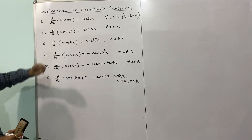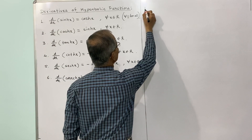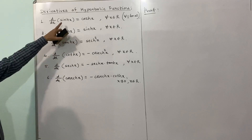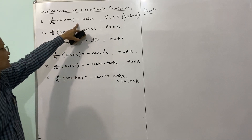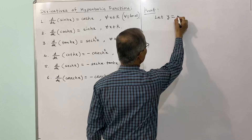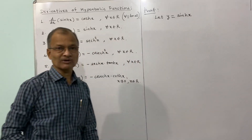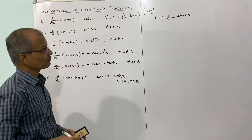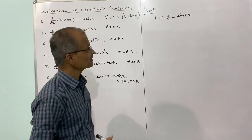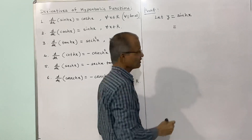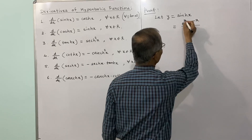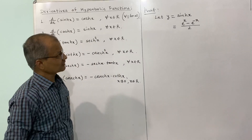We shall now consider the first result and its proof. The first is the derivative of hyperbolic sin x is equal to hyperbolic cos x. To find this, we consider y equals hyperbolic sin x. These results are simple to prove — we use the definition of the hyperbolic function and the rules of differentiation. Hyperbolic sin x is defined as e to the power x minus e to the power negative x, divided by 2.